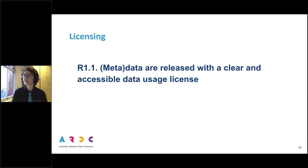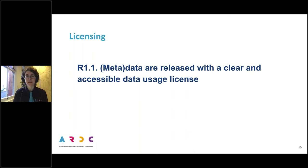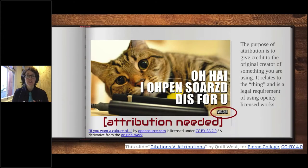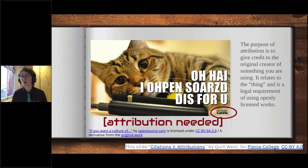Now it's time to talk about licensing, then data citation. When the aim is actual reuse of research data, this principle encourages us to be clear about how people can do that. When a data citation tells you where you got data from and can aid provenance, a license sets out your expectations for others to follow. Many licenses feature attribution as an expectation of usage. The purpose of attribution is to give credit to the original creator of something you are using — it is a legal requirement of using openly licensed works, because a license is a legal instrument.